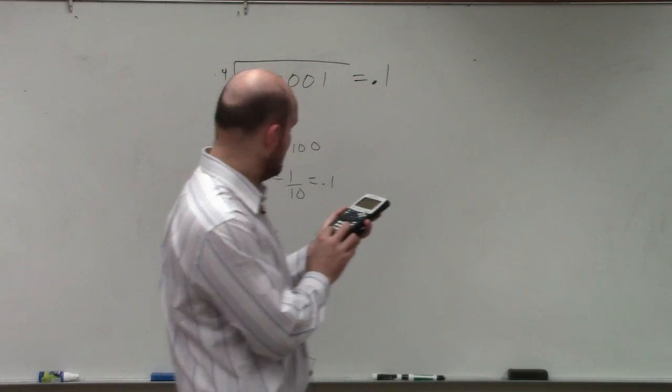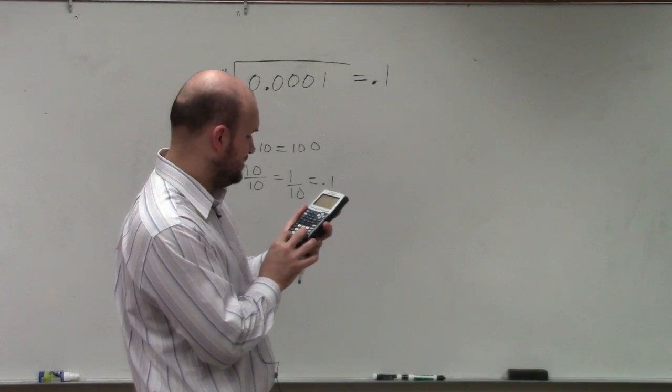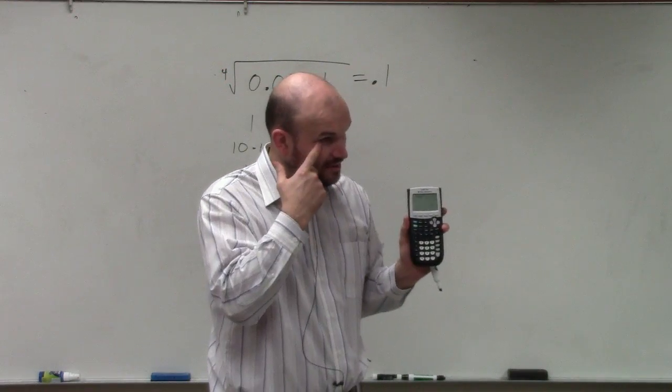And then type in 0.0001, and you'd get 0.1.